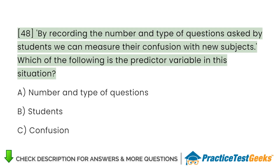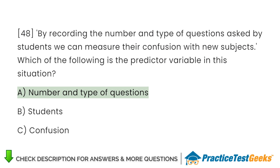By recording the number and type of questions asked by students, we can measure their confusion with new subjects. Which of the following is the predictor variable in this situation? A. Number and type of questions B. Students C. Confusion